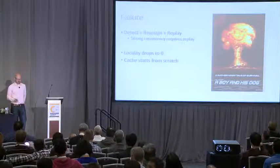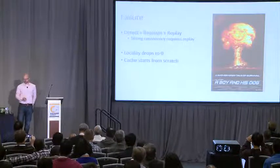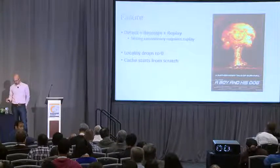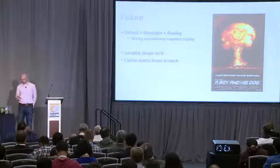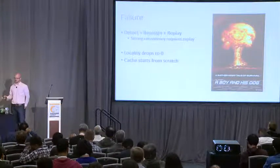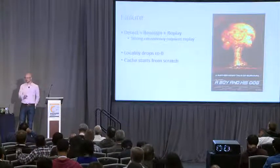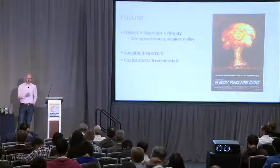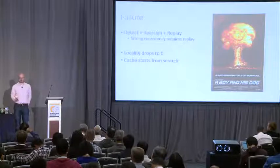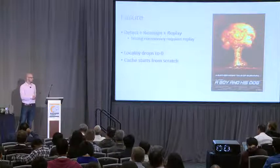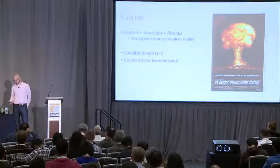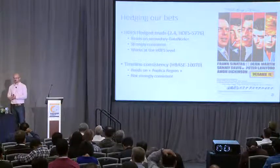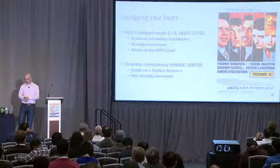Read-side failure is a little worse than the write side because we do have WAL replay to deal with for maintaining strong consistency guarantees. Detection, assignment, and replay all still apply. The other issue with machine failure is that locality drops to zero — on a larger cluster, the newly assigned region server has likely never compacted that data before, so data is quite likely not local, requiring network requests. The block cache is also empty, so you have to repopulate it from zero. Just like on the write side, failure isn't binary — you've got machines that are slowing and dying.